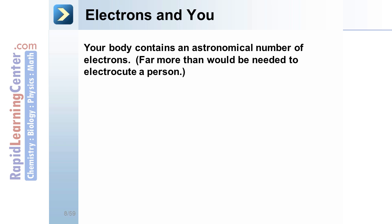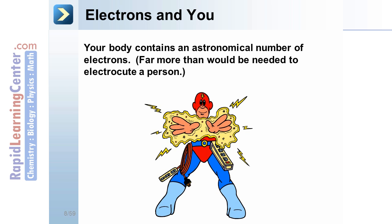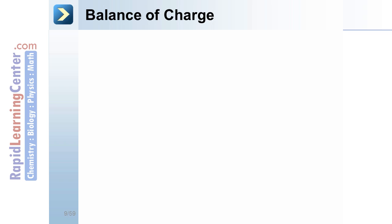Electrons in You. Even though you're not aware of it, your body contains an astronomically high number of electrons, far more than would be needed to electrocute a person. How can this be? Balance of charge.